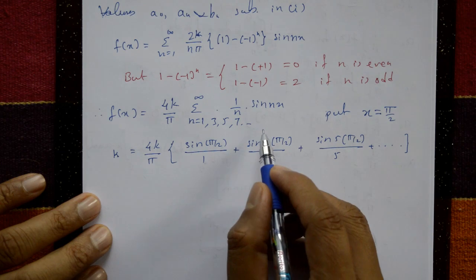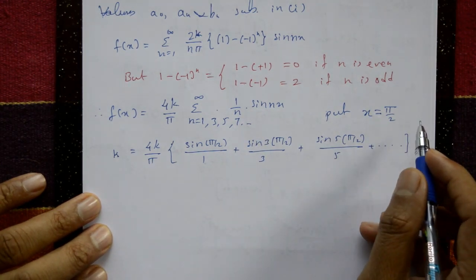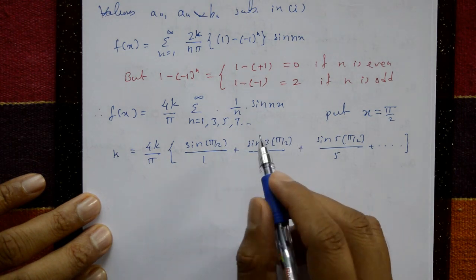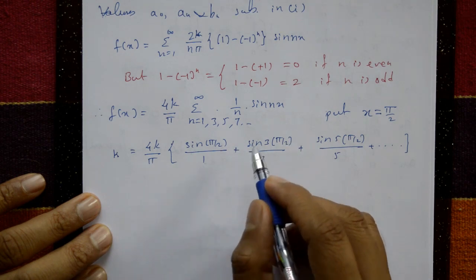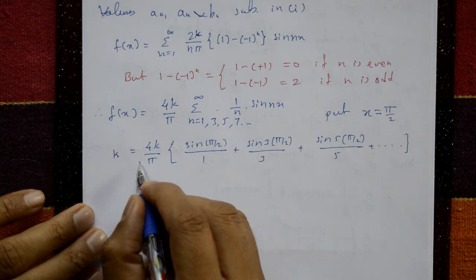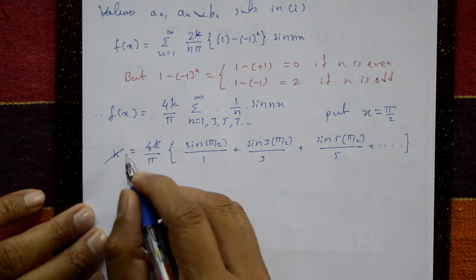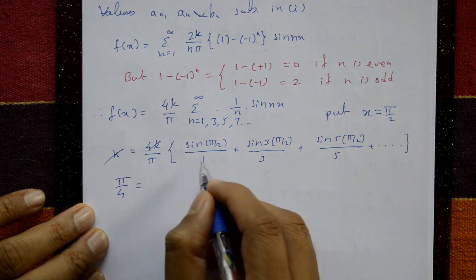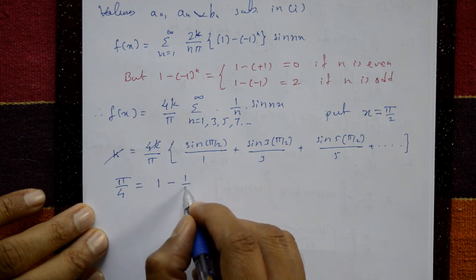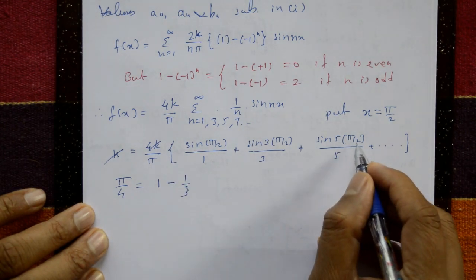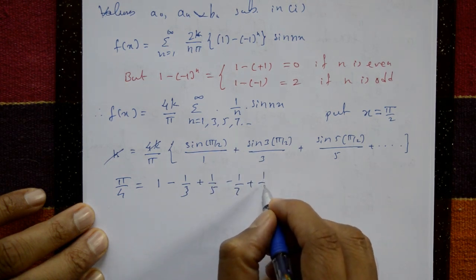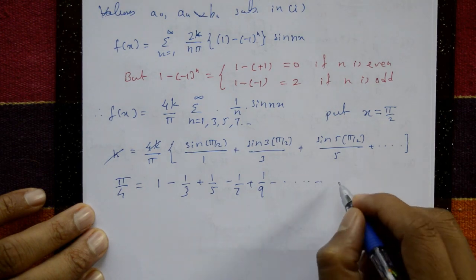Even terms like sin(2x), sin(4x), sin(6x) at x = π/2 give sin(π), sin(2π), sin(3π) etc., which are all 0, so we need only odd terms. Cross multiplying both sides: k equals 4k/π times [sin(π/2)/1 plus sin(3π/2)/3 plus sin(5π/2)/5 plus ...], giving π/4 equals 1 minus 1/3 plus 1/5 minus 1/7 plus so on. This is the required series.